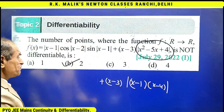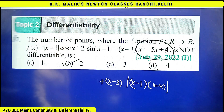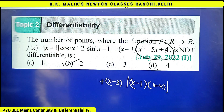Hence we can say B is the correct choice, because there are two points of non-differentiability. This is the smart way of doing the question.